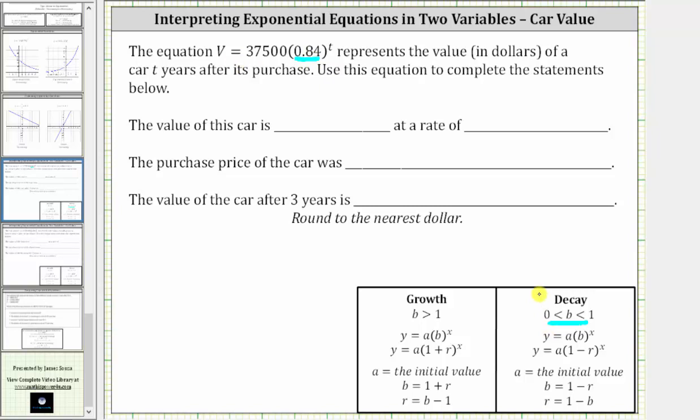This means the value of v is decreasing as t, time in years, increases, which should make sense because we know the value of a car decreases over time.